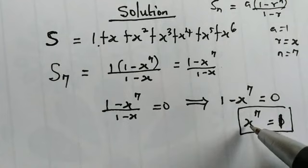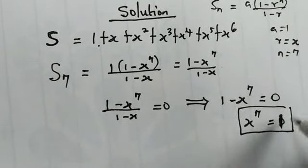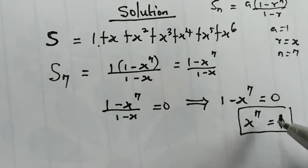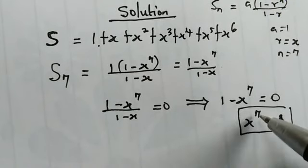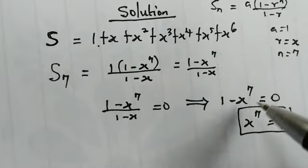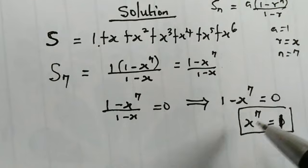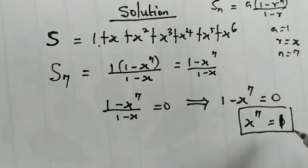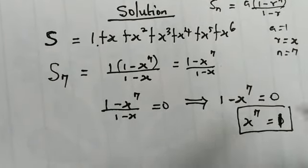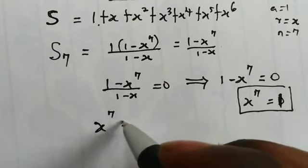We could figure out one of the values of x by taking the 7th root of both sides, thereby getting x equal to 1. But that is not a solution. x to the power of 7 equal to 1 doesn't mean we can simply take x equal to 1. This is telling us that the values of x in this equation, when raised to the power of 7, result in 1. So we have x to the power of 7 equals 1.